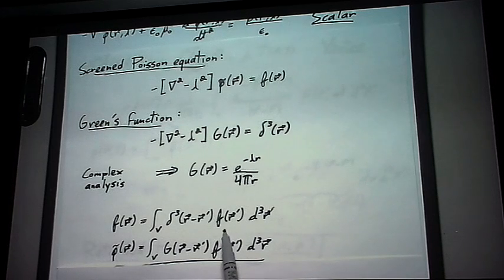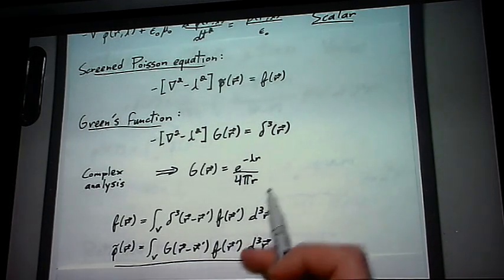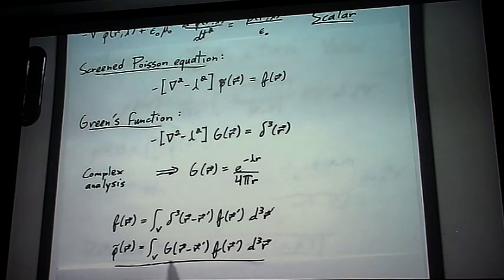So what this translates into is, since g is the solution of the equation where f is equal to the delta function, then for a general f, which is the sum of delta functions, then we can just say that the solution will be a sum of the Green's functions for respective r prime.